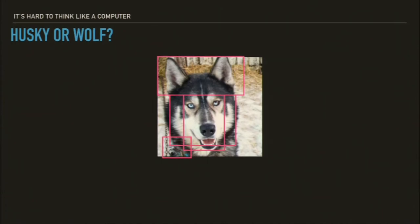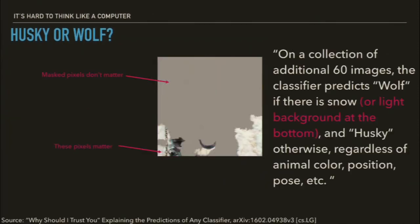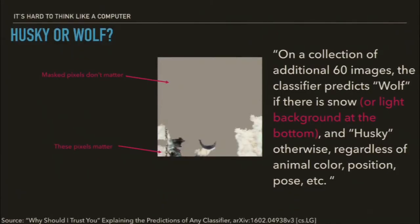How might a computer look at it? This is from a research paper. What they were doing is they were training to determine between a wolf and a husky. We're going to take away all the pixels that were not relevant to the computer's decision. What was it going off of? Snow is a very human way to think about it, because again, what was our input? Numbers. And as highlighted in the pink text, what was it looking for? Light colored pixels at the bottom of the image.